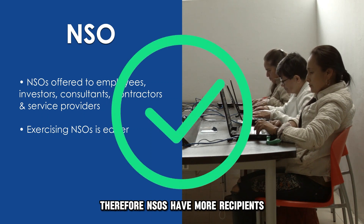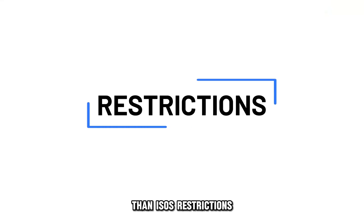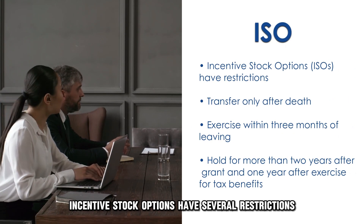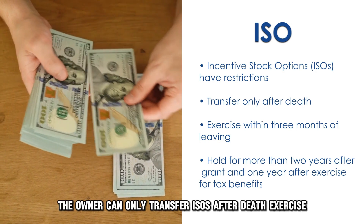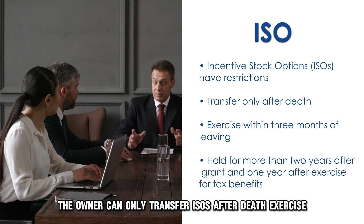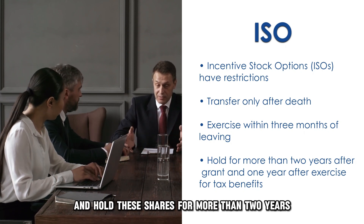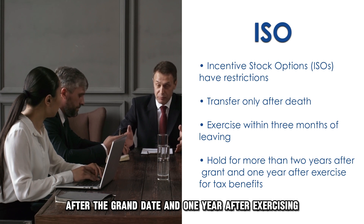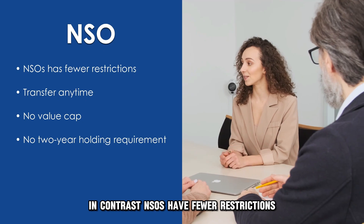Incentive stock options have several restrictions. For instance, the owner can only transfer ISOs after death, exercise these options within three months of leaving the company, and hold these shares for more than two years after the grant date and one year after exercising to enjoy the tax benefits.